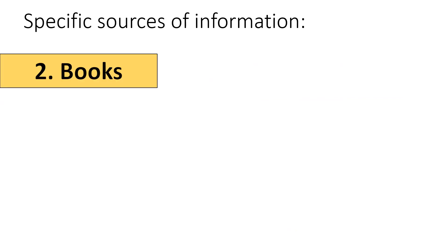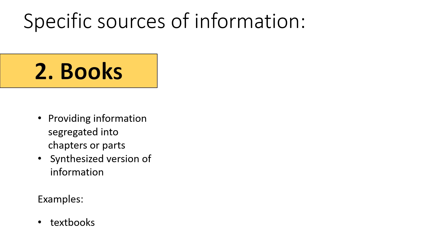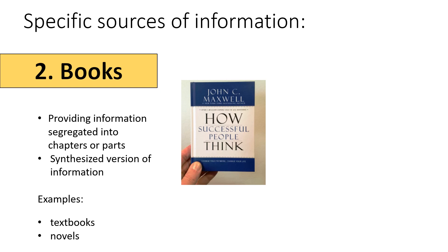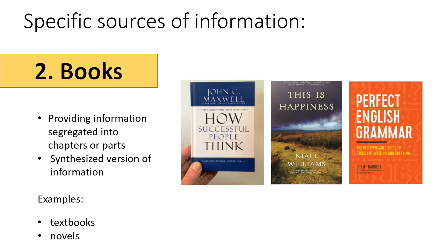Another way to get information is through books. Books provide information segregated into chapters or parts. It is a synthesized version of information. Examples are textbooks and novels.